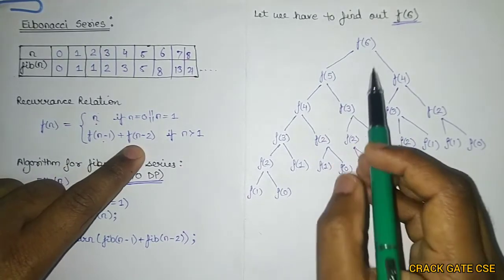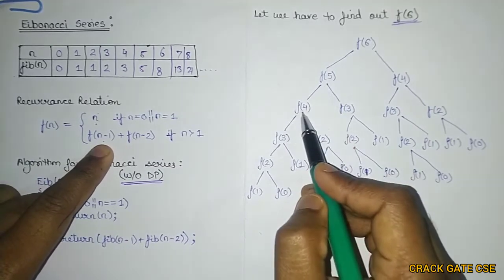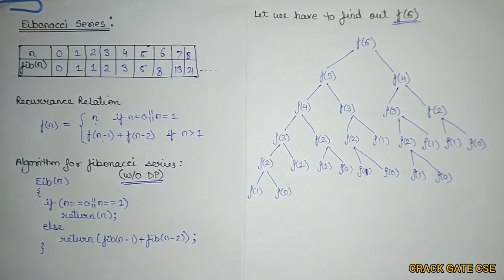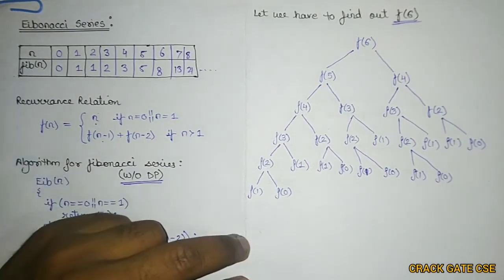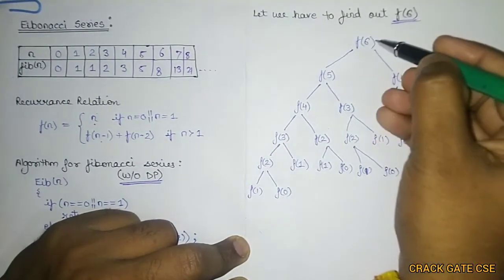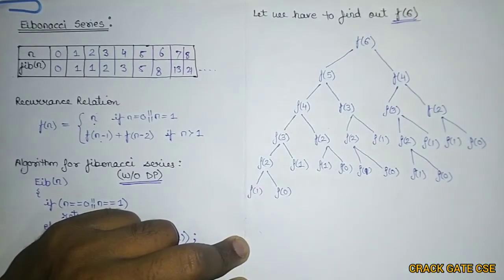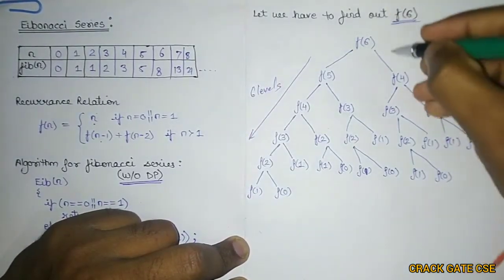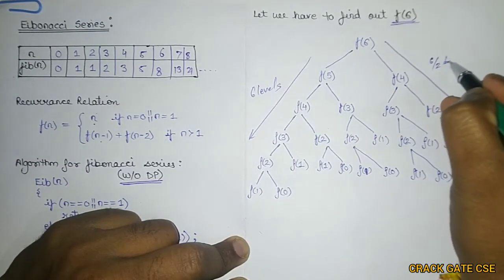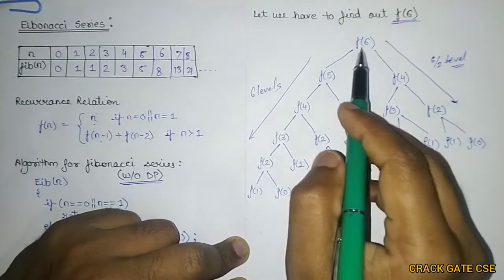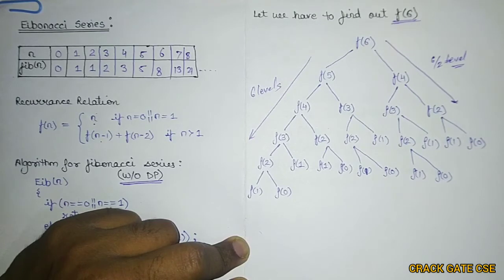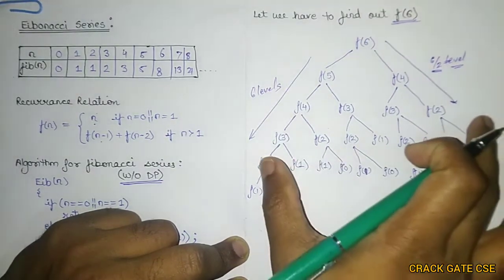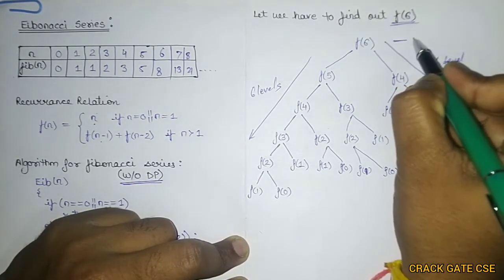F(6) can be written as F(5) and F(4). Similarly, F(5) can be written as F(4) and F(3). After drawing this diagram, what is the time complexity without dynamic programming? You can see there are six different levels, so for any value of n, there are n levels on the left-hand side of the tree and approximately n/2 levels on the right-hand side.